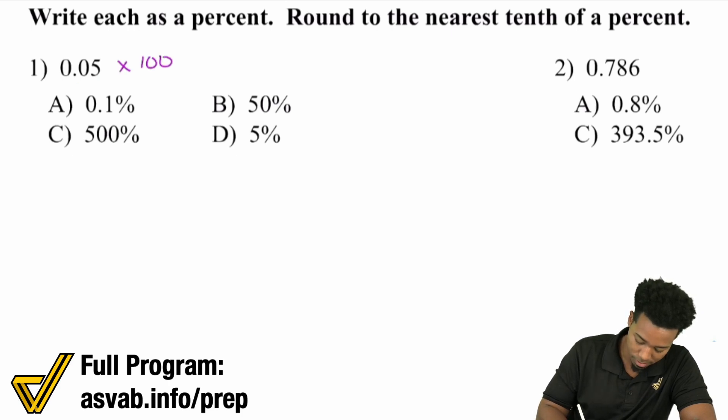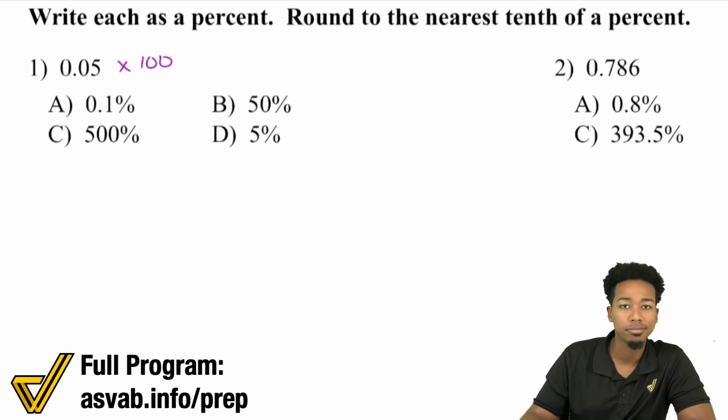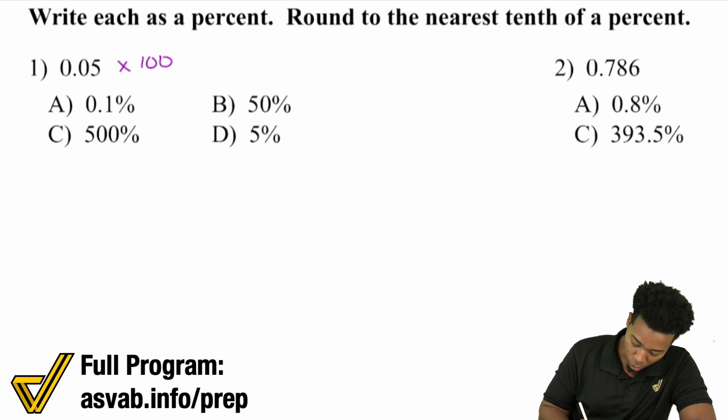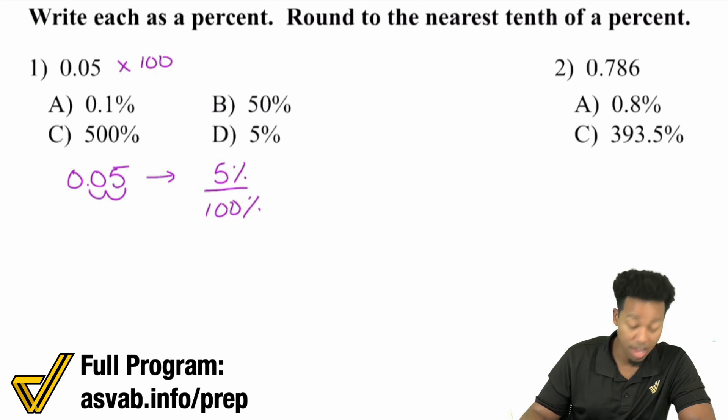And the easiest way to do that. Here's the rule. Multiply by 100. That's it. And the shortcut, the super duper shortcut to this is just move the decimal place over two times to the right. And that's it. So 0.05. That is the same thing as saying, hey, just move it over one, two. So we have 5 out of 100. 5% out of 100. That's it.